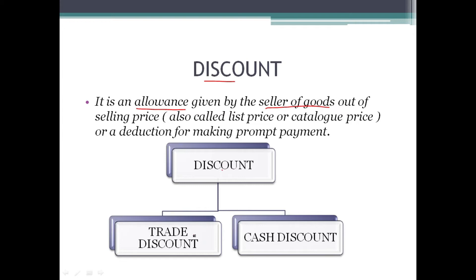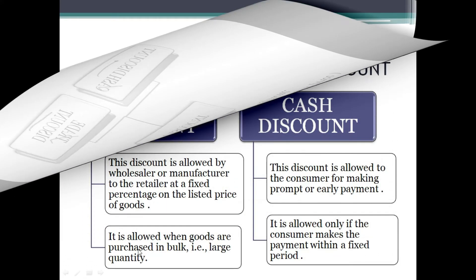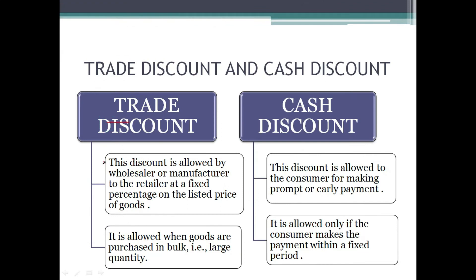This discount is received in two ways in accounting terms — one is trade discount and one is cash discount. Trade discount is normally given by a manufacturer or wholesaler to retailers on bulk quantity — if we buy in bulk we get a reduced price. Cash discount is given when we make payment upfront or early, on a fixed percentage — for example, 10% trade discount on 20 rupees listed price.